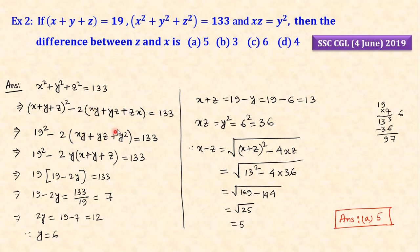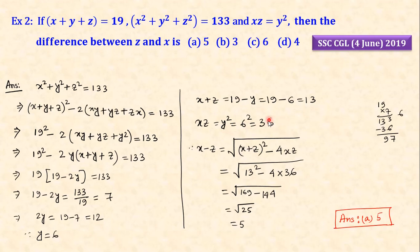Substituting x plus y plus z equals 19, and noting that xy, yz, zx values relate to y², taking y common we get x plus y plus z again equals 19. Solving further, we get x plus y plus z equal to 19, so x plus z equals 19 minus y, meaning 13. And xz equals y² meaning 6² equals 36. So x minus z equals root of (x plus z)² minus 4xz, giving us 100. Checking the answer against the correct question.